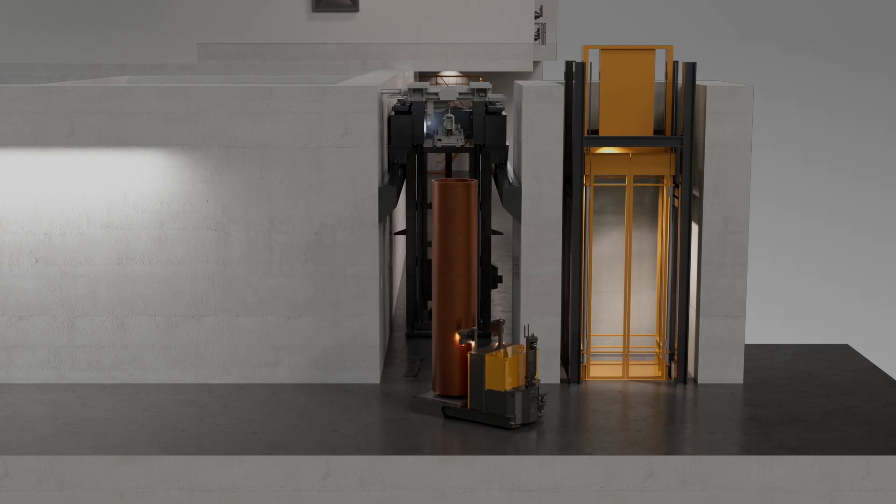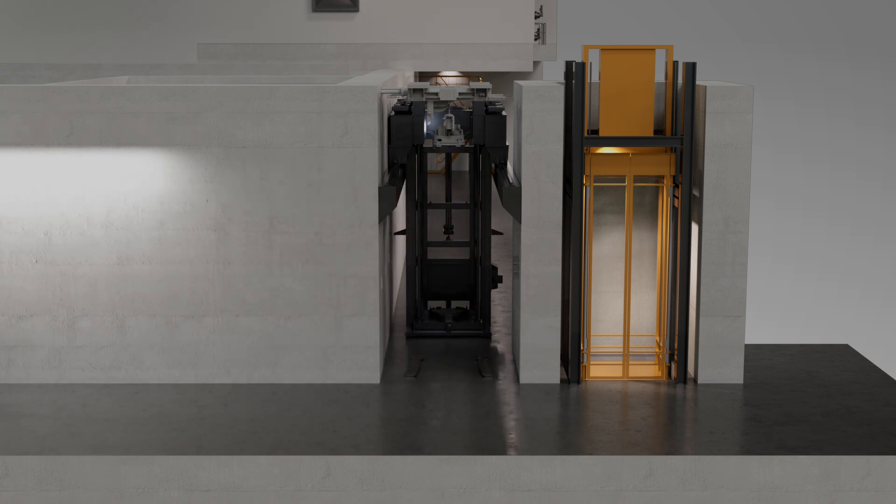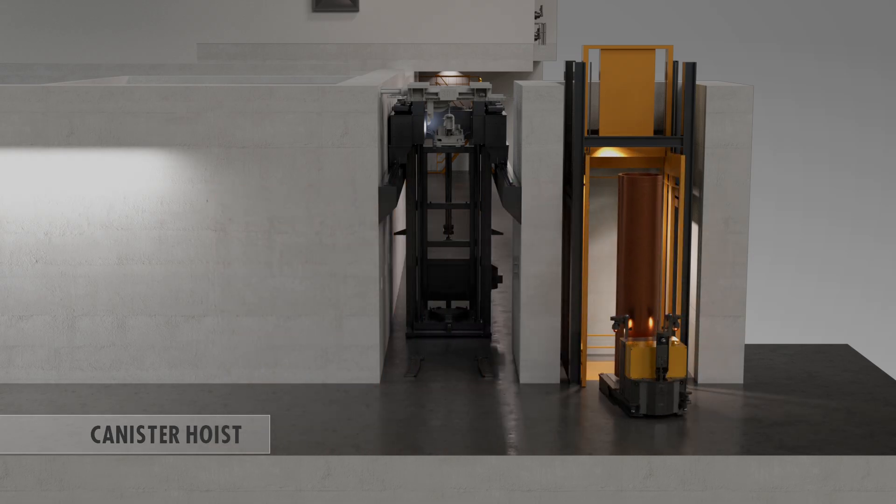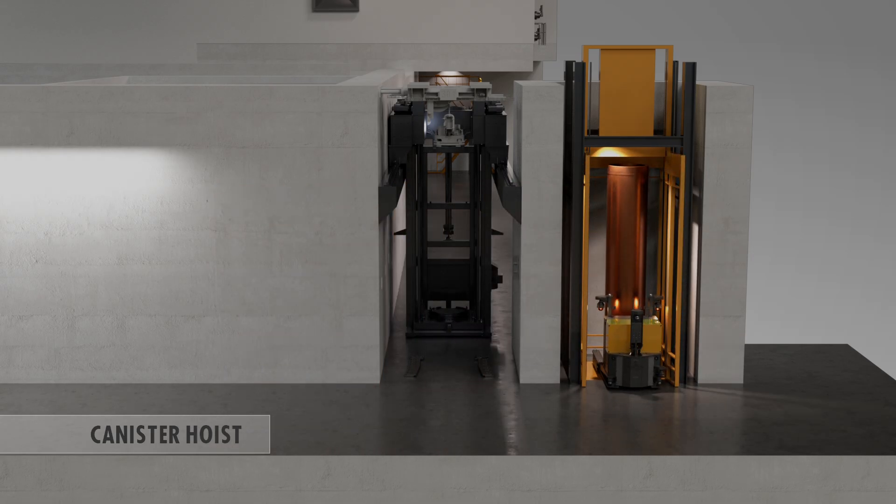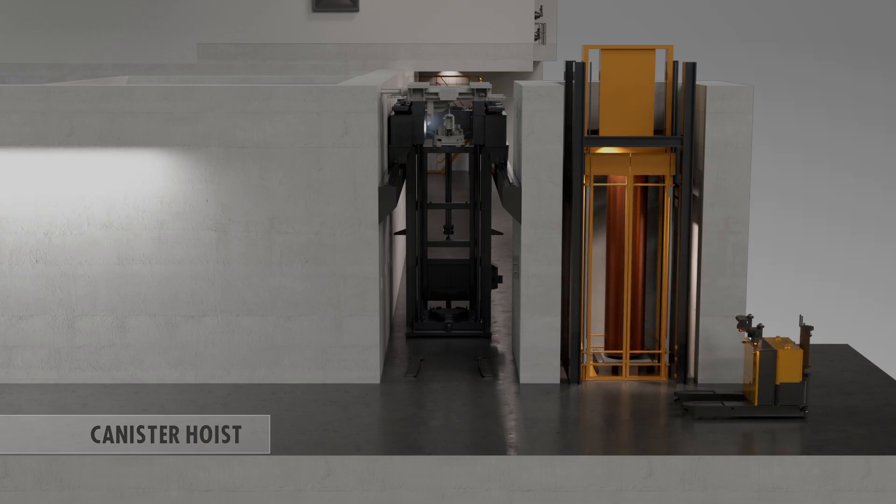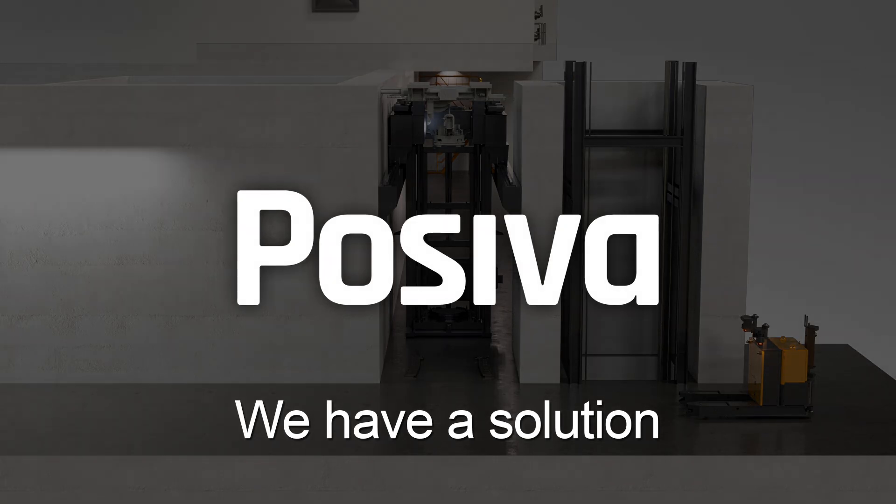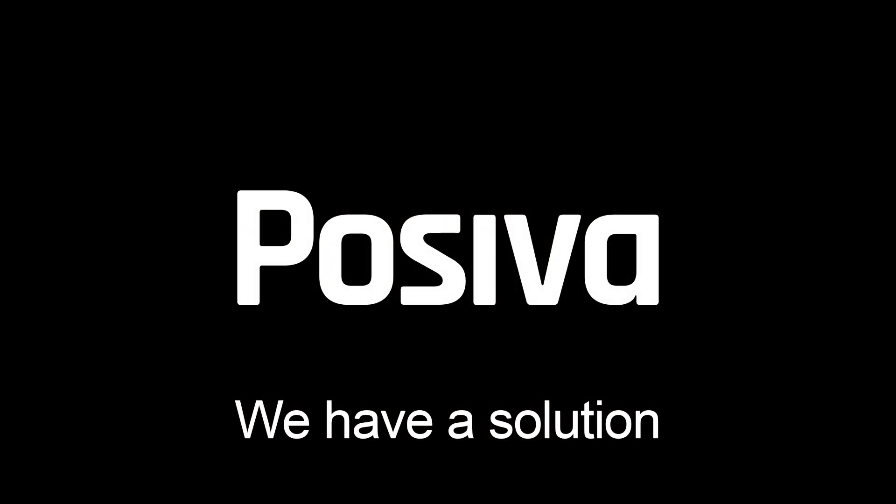When the disposal campaign is about to start, the canisters are transferred from the storage area of the encapsulation plant to the intermediate storage area of the disposal facility at the disposal depth by means of a canister hoist in the shaft.